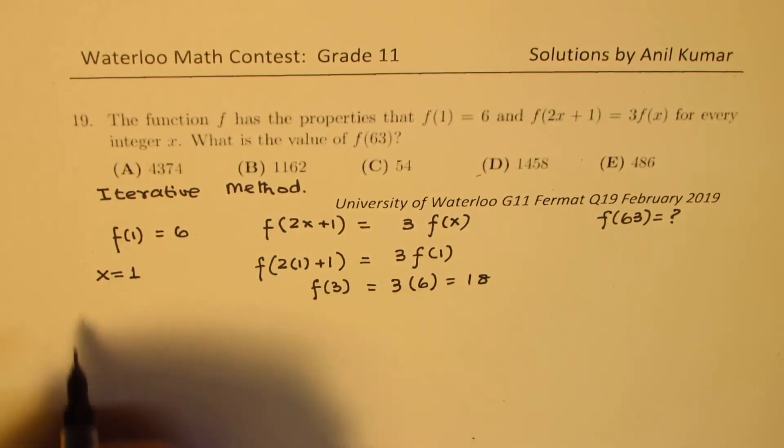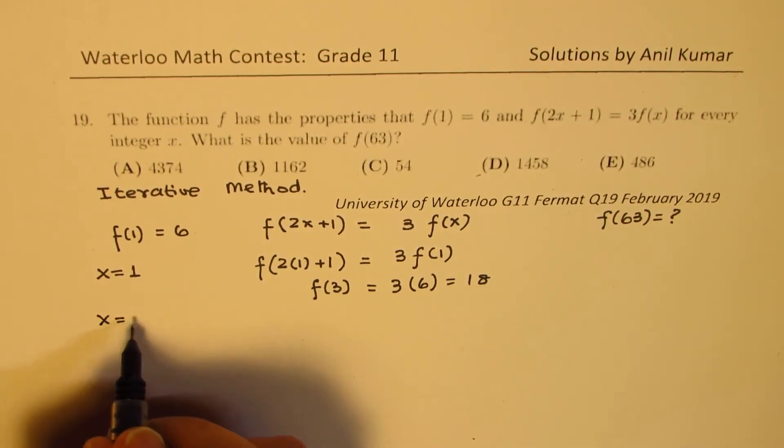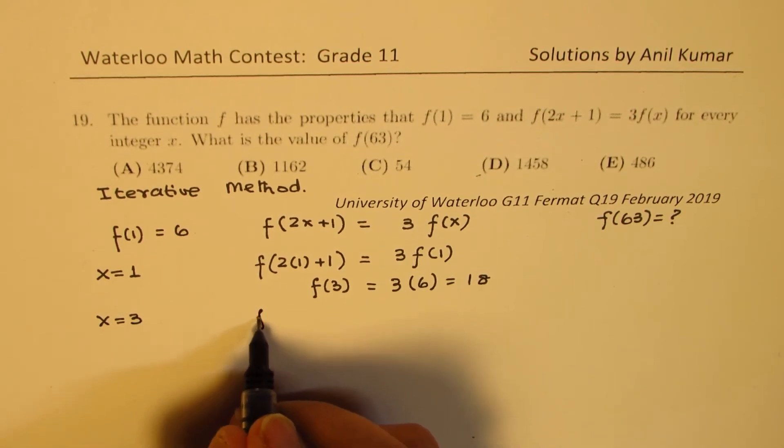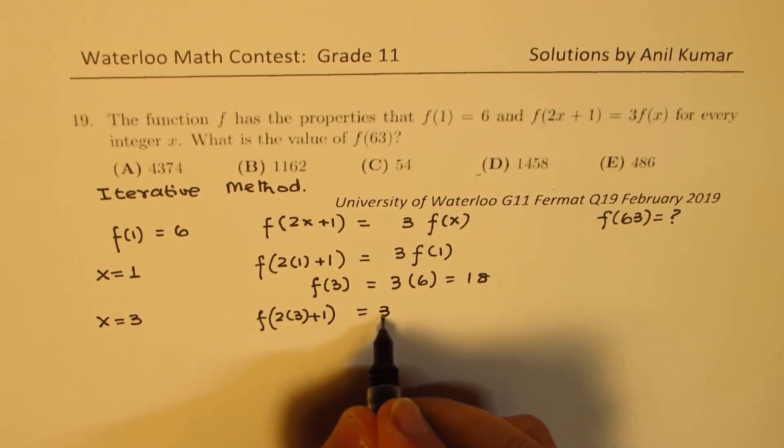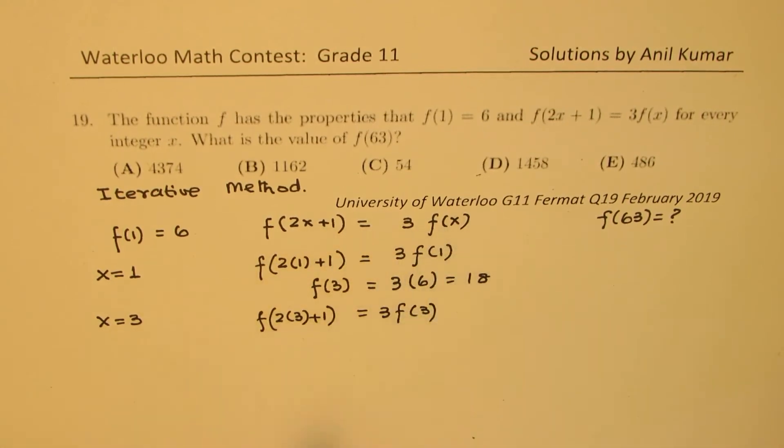Now since we know f(3), we can substitute x = 3. If I substitute x = 3 here, then we have f(2×3+1) = 3f(3). We are using the original equation.